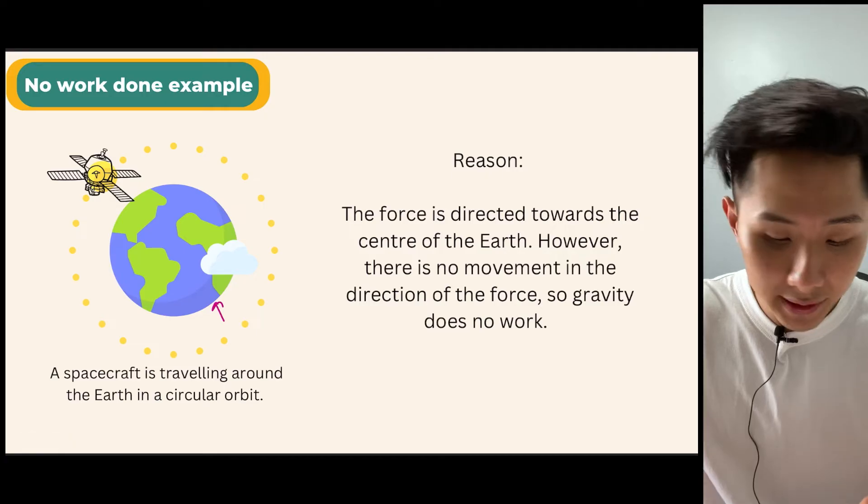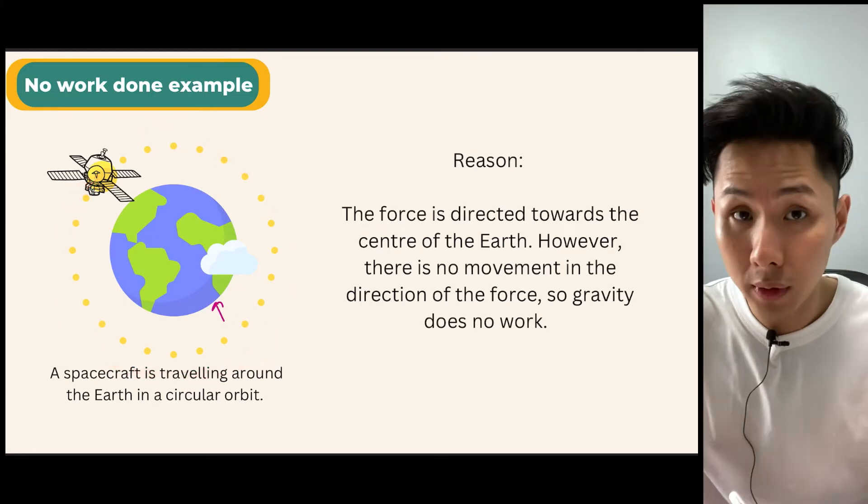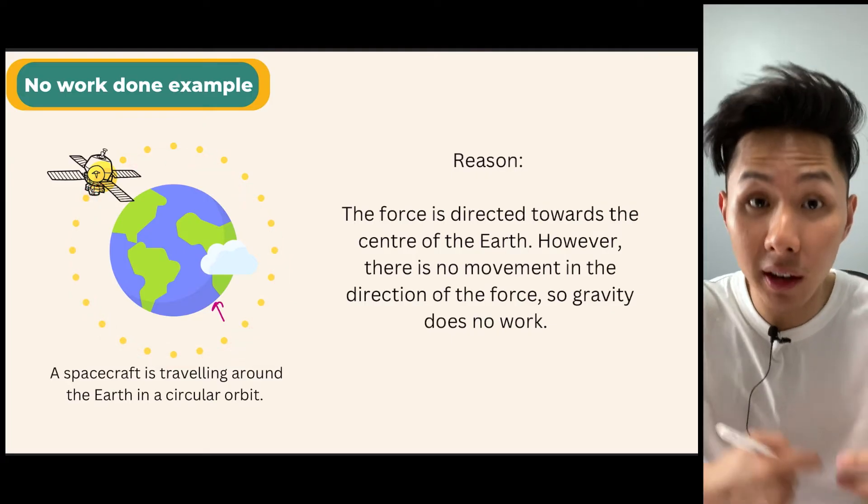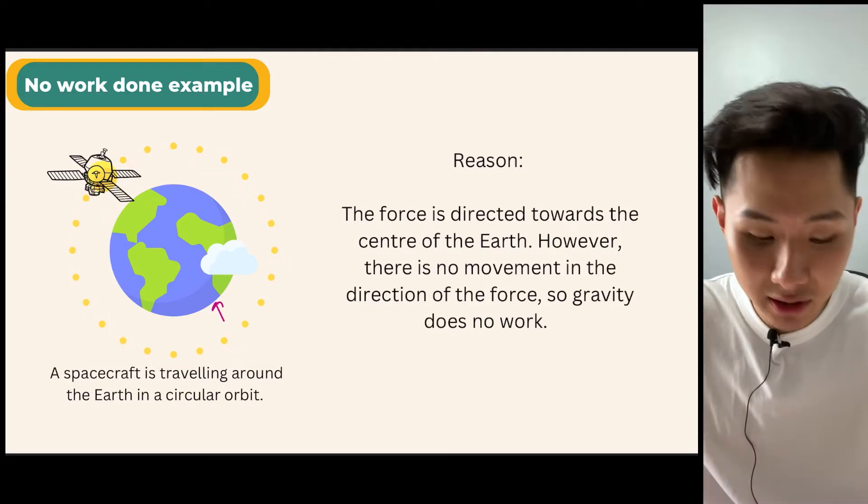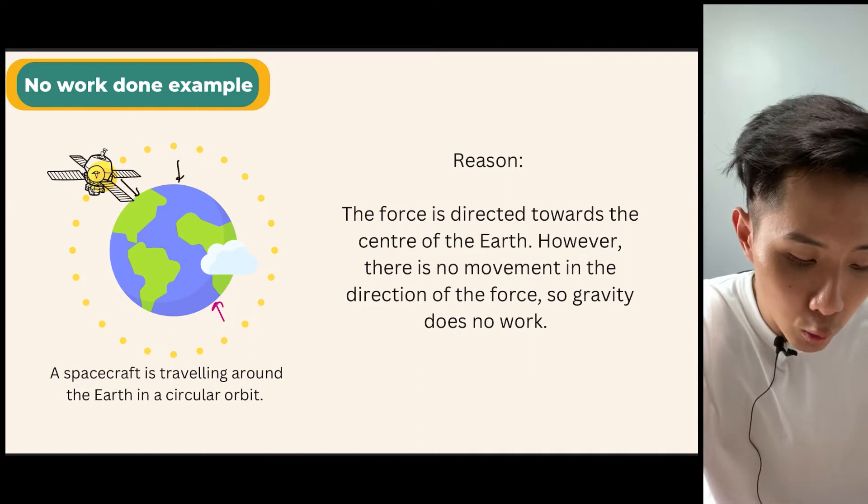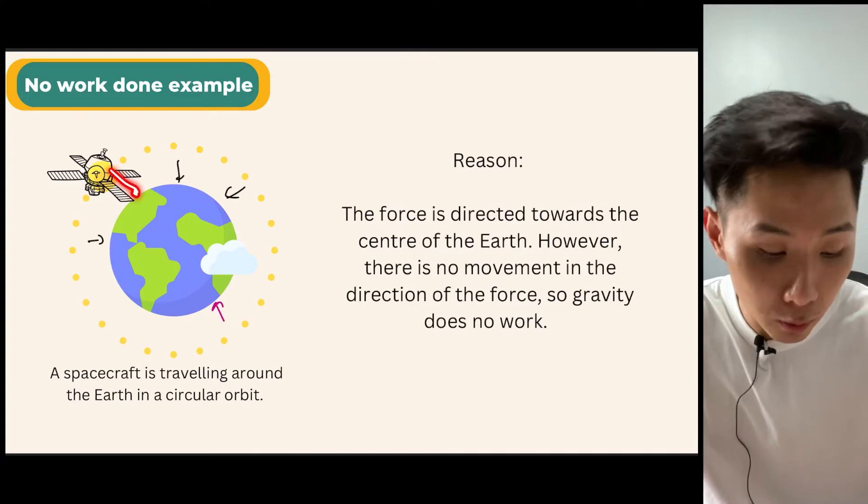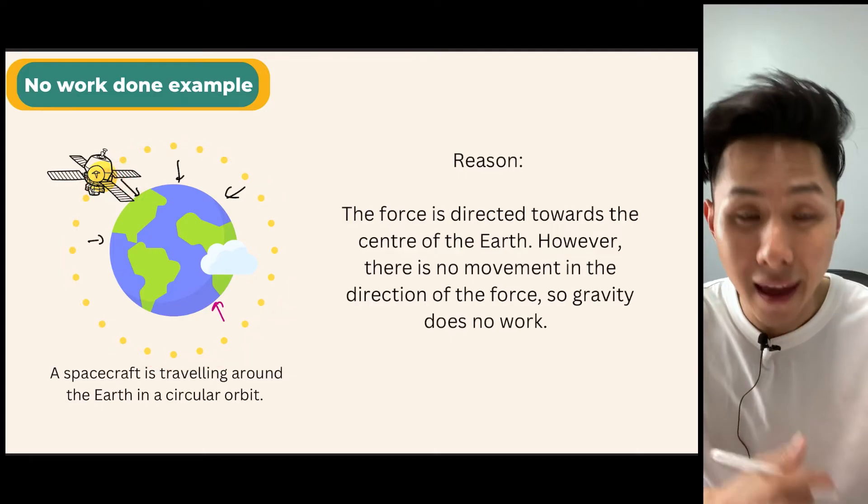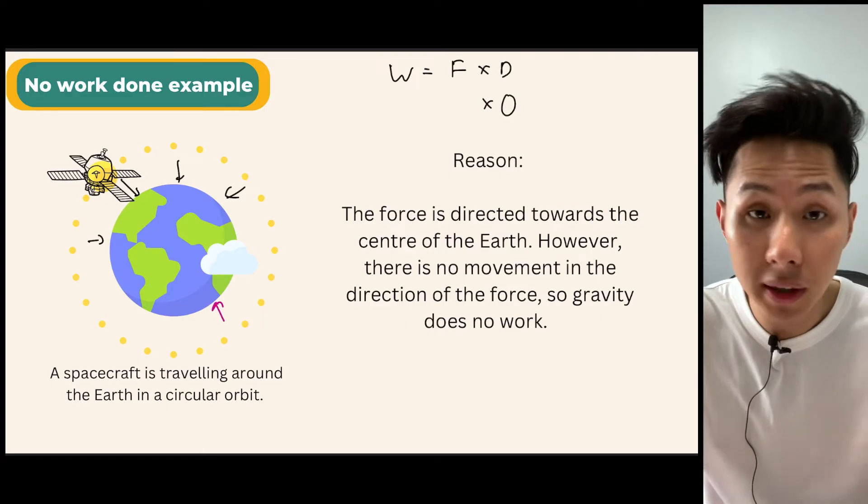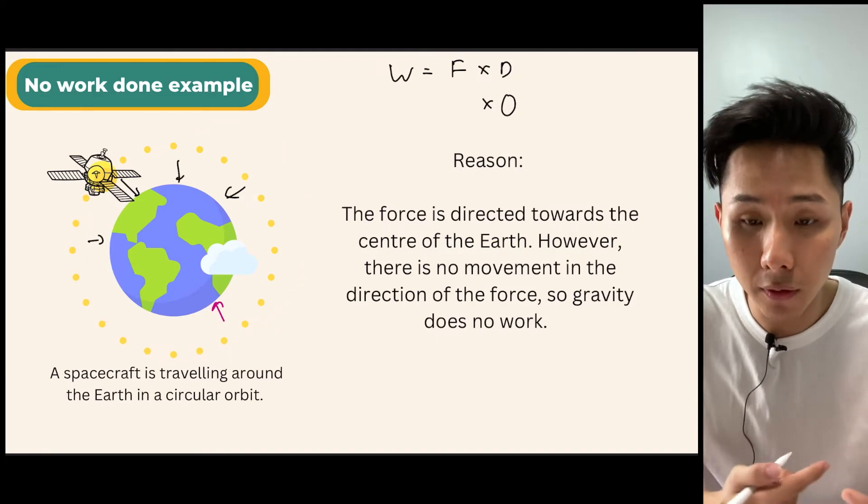Another example is when this spacecraft here is orbiting the Earth. And even though it's moving, that should be distance, right? But the distance that's traveled by this spacecraft is not in the direction of the force. And where is the direction of the force? We know that when something is moving in a circular fashion, the direction of the force is towards the center. But the spacecraft isn't moving towards the center. It's moving in a circular fashion. And therefore, W equal to F times D. The D here will be zero because the distance traveled is not the direction of the force.